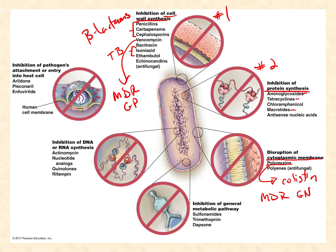At the six o'clock position on the diagram we see inhibition of general metabolic pathways. Realistically there's only one general metabolic pathway targeted - the pathway of folic acid synthesis. For that reason these are sometimes called anti-folate drugs, more commonly known as sulfa drugs. These knock out a metabolic pathway: bacteria don't consume folic acid from the environment like you and I do - they actually synthesize it themselves - which means we can knock out that pathway without hurting the patient, because you and I don't have that pathway.